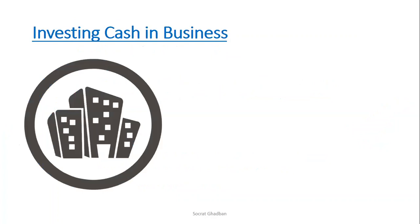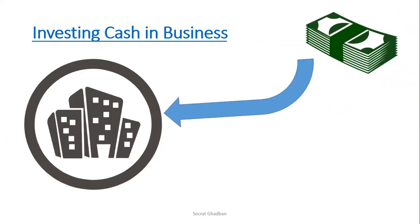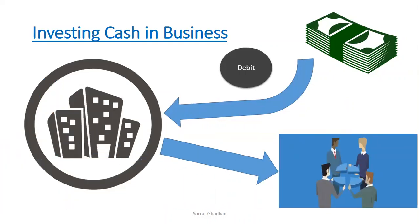In order to illustrate the procedure, we have to see different transactions. The first transaction is investing cash in business. Cash enters the company, and since it enters the company, it means it's debit. And since it's a double-entry system, the company has to provide something in return. So the company will provide ownership, and since it's providing it, it's a credit.